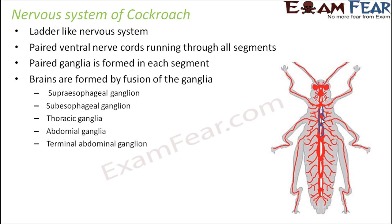Brains are formed by fusion of the ganglia. The first section is the supraesophageal ganglia — supra means above — and this is what is considered as the brain. This portion, the supraesophageal ganglia, forms the central nervous system.